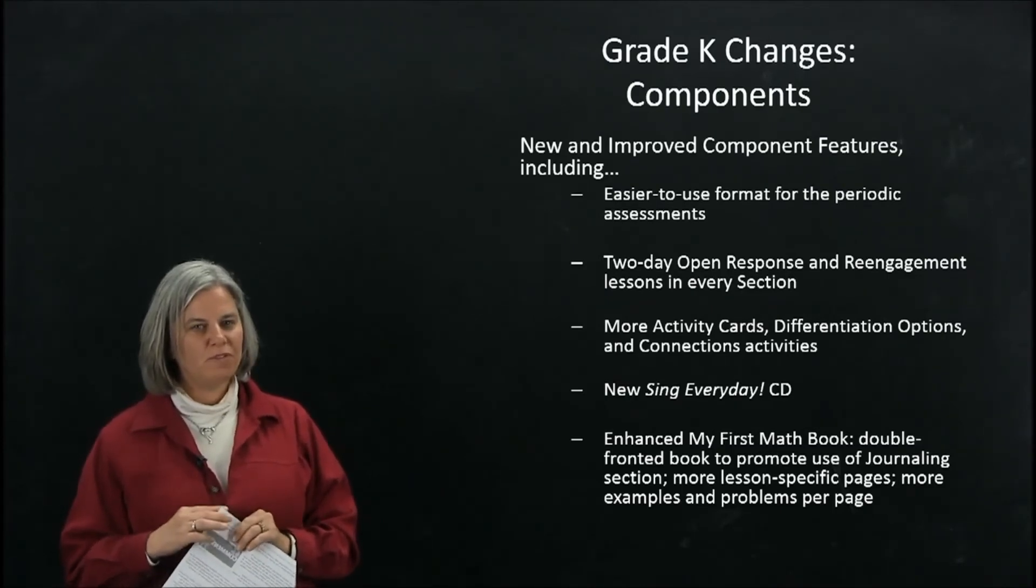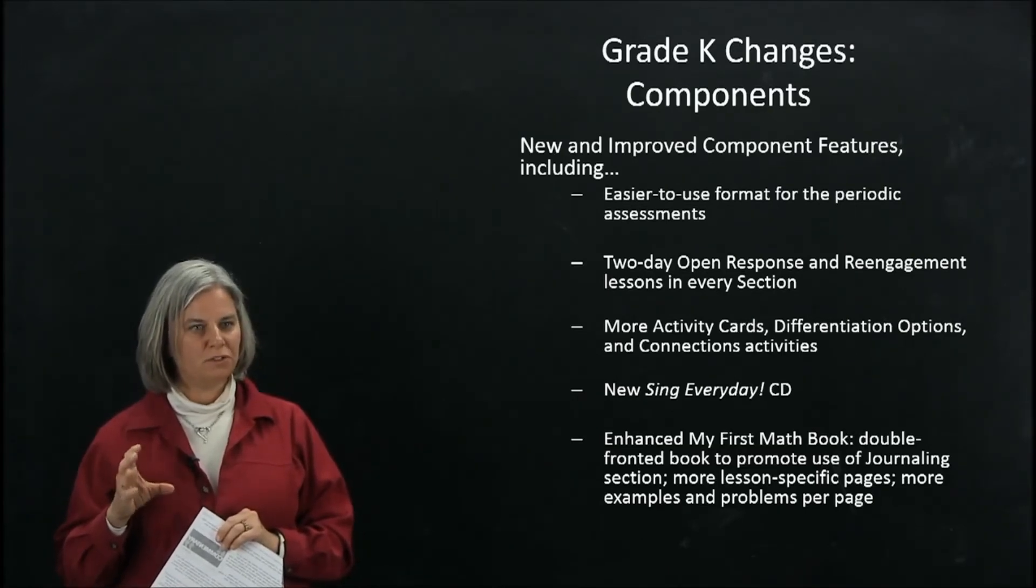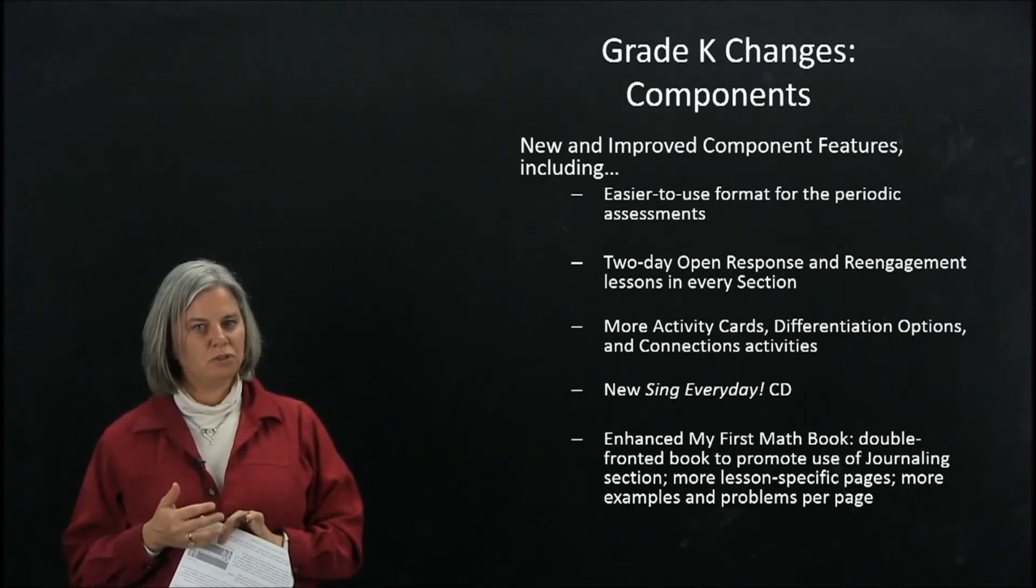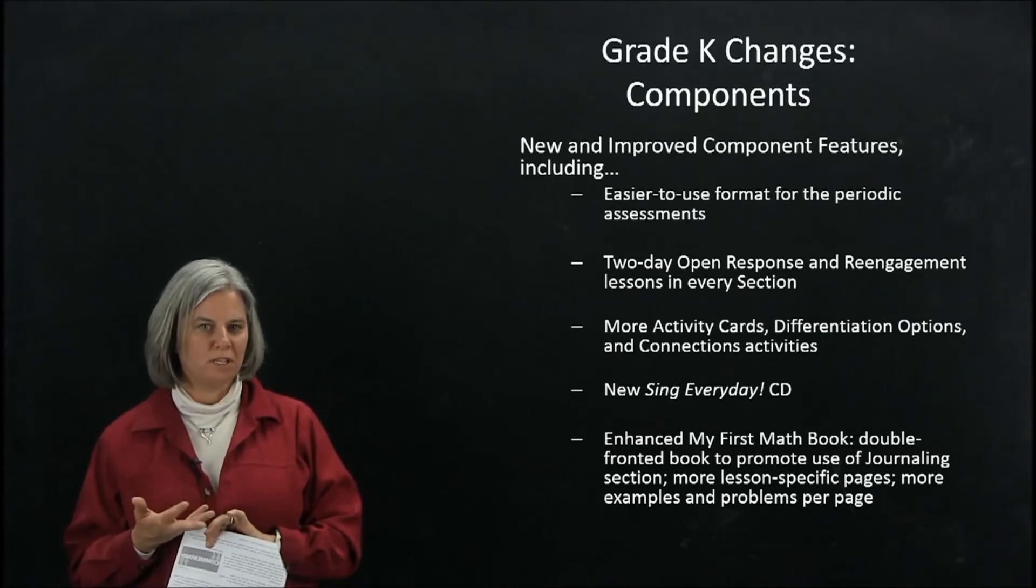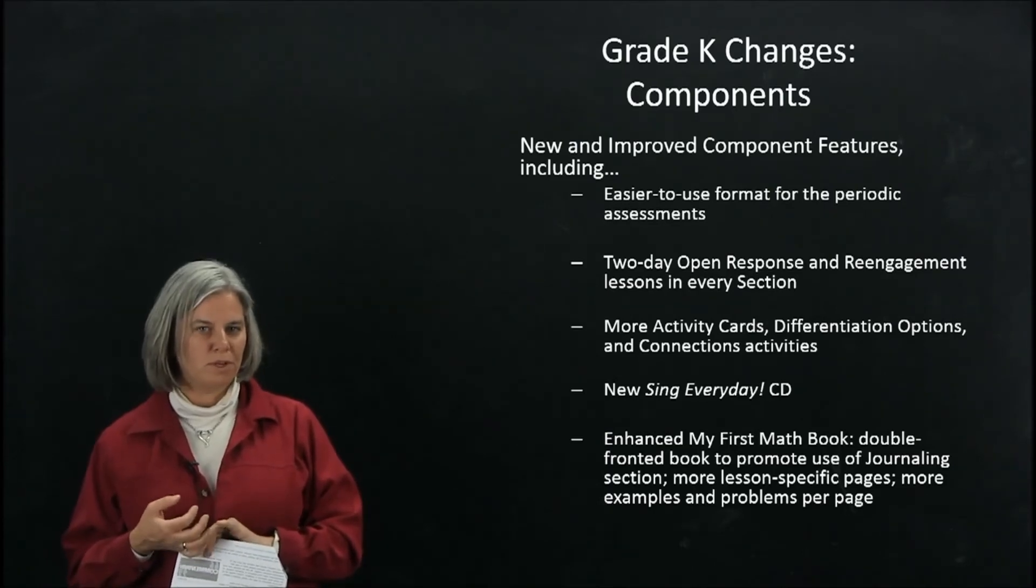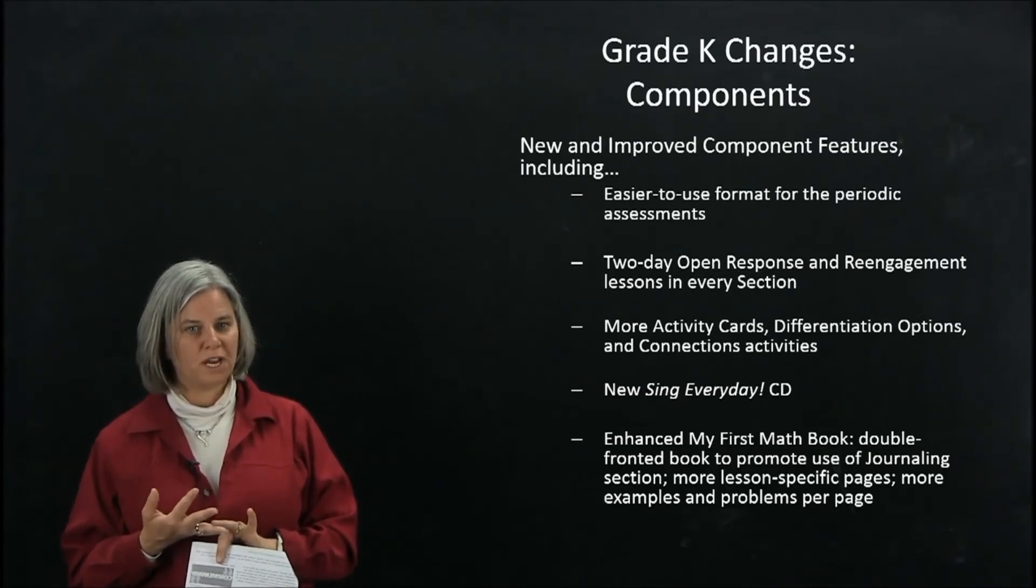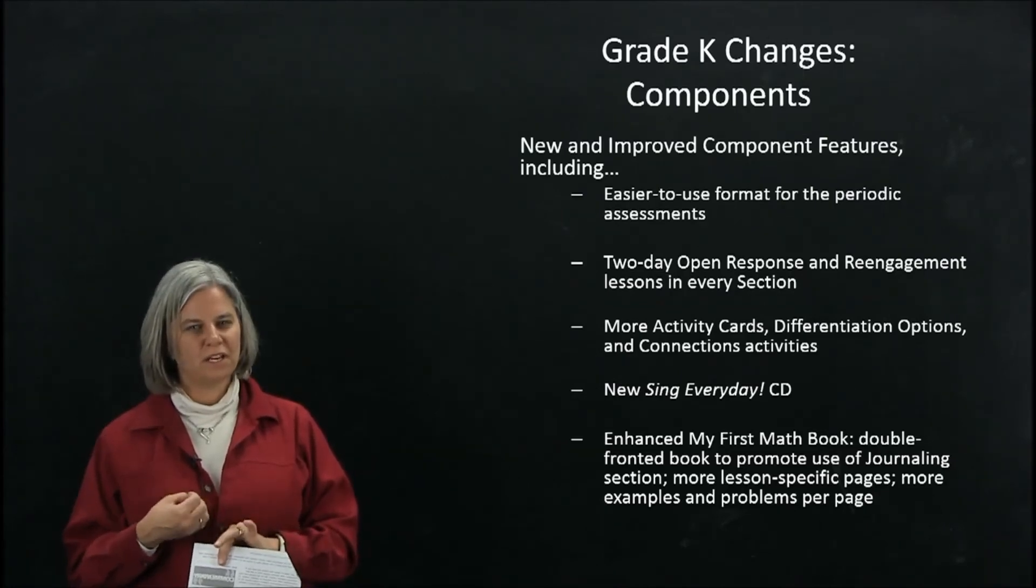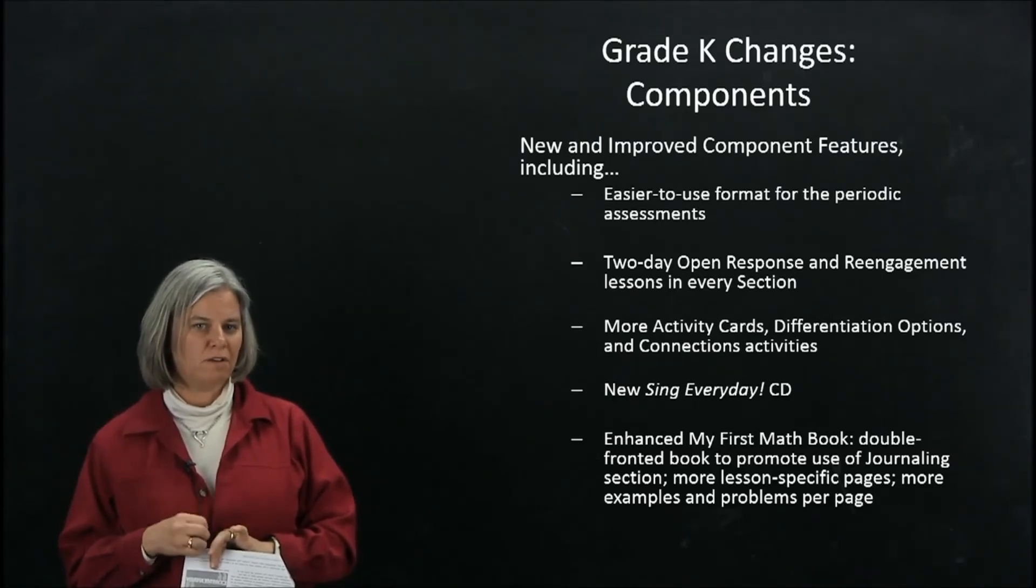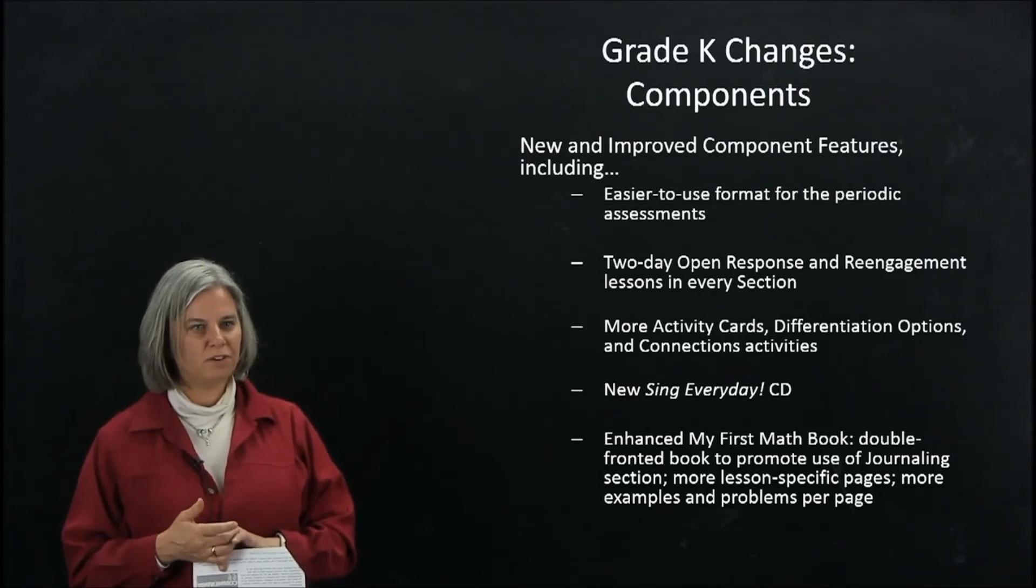The other thing we've got is just a range of different changes to the components. We've taken our periodic assessments, our beginning of year, mid-year, and end of year, and modified the format in a way that we think is easier to use. Essentially the task description itself is on the recording sheet. We have added, as have all the other grades, a two-day open response and engagement lesson in every section that begins in section 2 and goes all the way through section 9. That's some really rich problem solving in ways that are appropriate and accessible for kindergartners. We've added more activity cards. I already mentioned that we have differentiation options of all three types in every single lesson. The connections activities are things like literacy connections, art connections, social studies connections. There's at least one of those cross-curricular activities in every single kindergarten lesson.